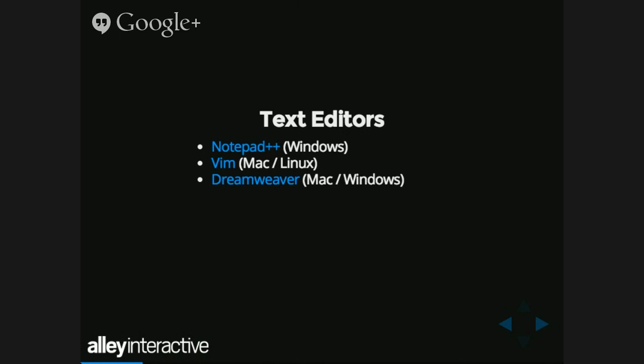Dreamweaver — hear me out. I'm not talking about the graphical side of Dreamweaver; that is a train wreck. But the text editor is actually pretty good and you can do some real work in there. If you're in a situation where maybe your company has bought an Adobe license but they refuse to pay for anything else and you can't install your own software, it's probably a pretty great choice. Just stay away from the graphical stuff. BBEdit is actually a local product, just north of Boston — it's been around forever. It's Mac only, but it does everything. People write encyclopedias in BBEdit as well as really great code.